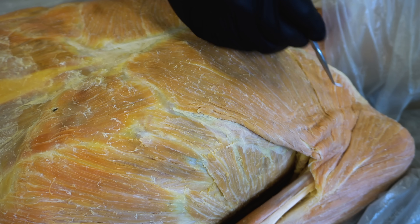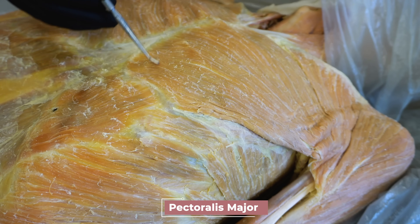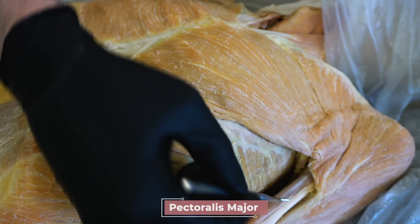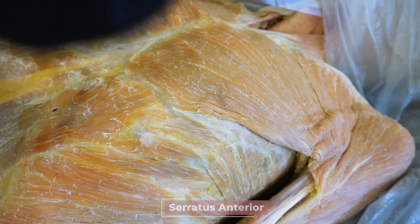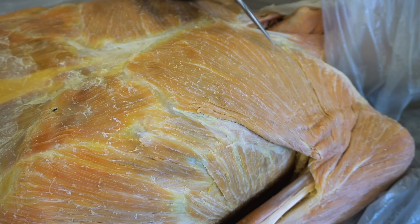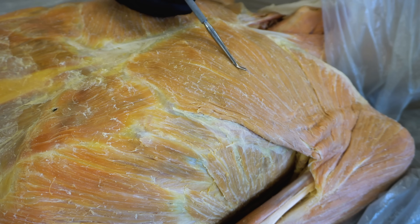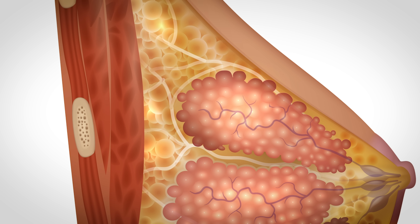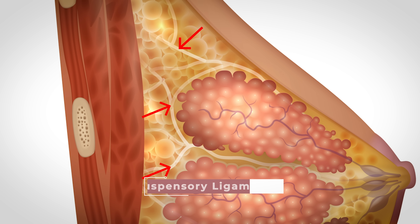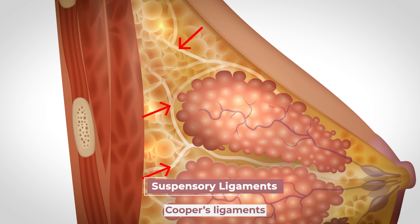The breasts are superficial to the pectoralis major and even cover a portion of the serratus anterior on the side. The breasts attach to these muscles with a layer of fascia and are also supported by connective tissue strands that run from the fascia to the skin, called suspensory ligaments of the breasts, also known as Cooper's ligaments.